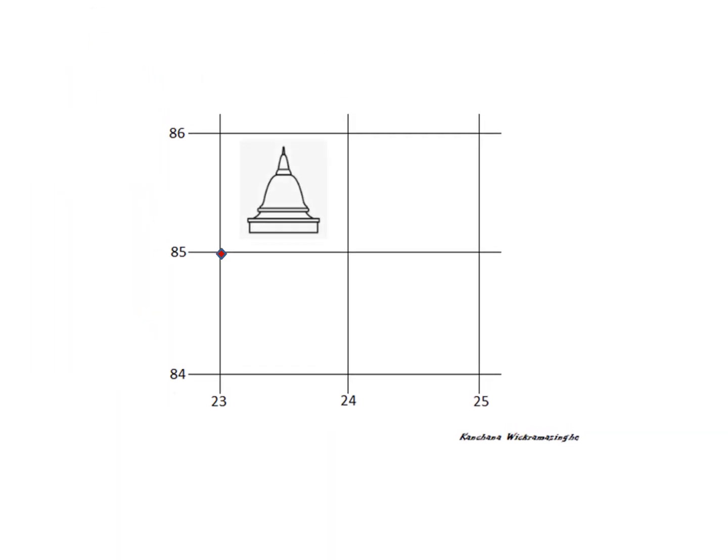Suppose you want to go to the temple. We have to find the four-figure grid reference of the temple. There are four simple technical things to consider. First, we check which square has the temple in it — here it's the square highlighted in yellow, and that becomes your square of interest. Next is its first wall and the first floor of that square, and where the first wall and the first floor meet.